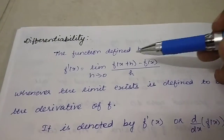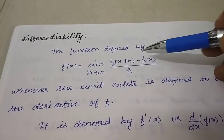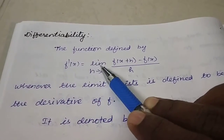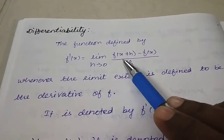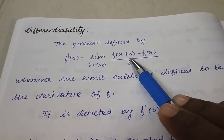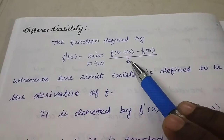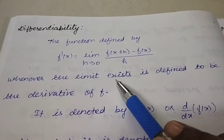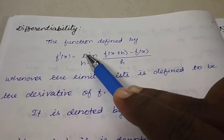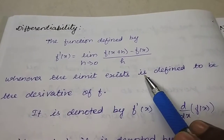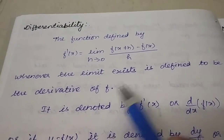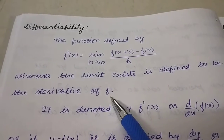This is the definition for derivative. The function defined by f'(x) equal to the limit as h tending to 0 of f(x+h) minus f(x) by h — whenever this limit exists — is defined to be the derivative of f.